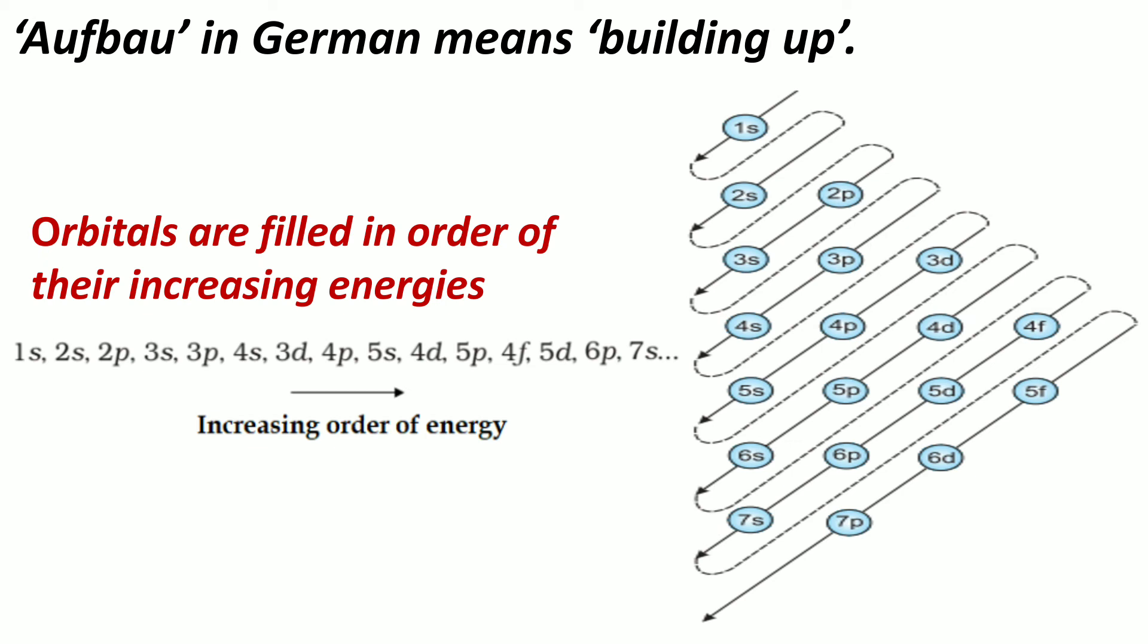For example, valence electron in potassium must choose between 3d and 4s orbitals. And as predicted by this sequence, it is found in 4s orbital. The above order should be assumed to be a rough guide to the filling of energy levels.